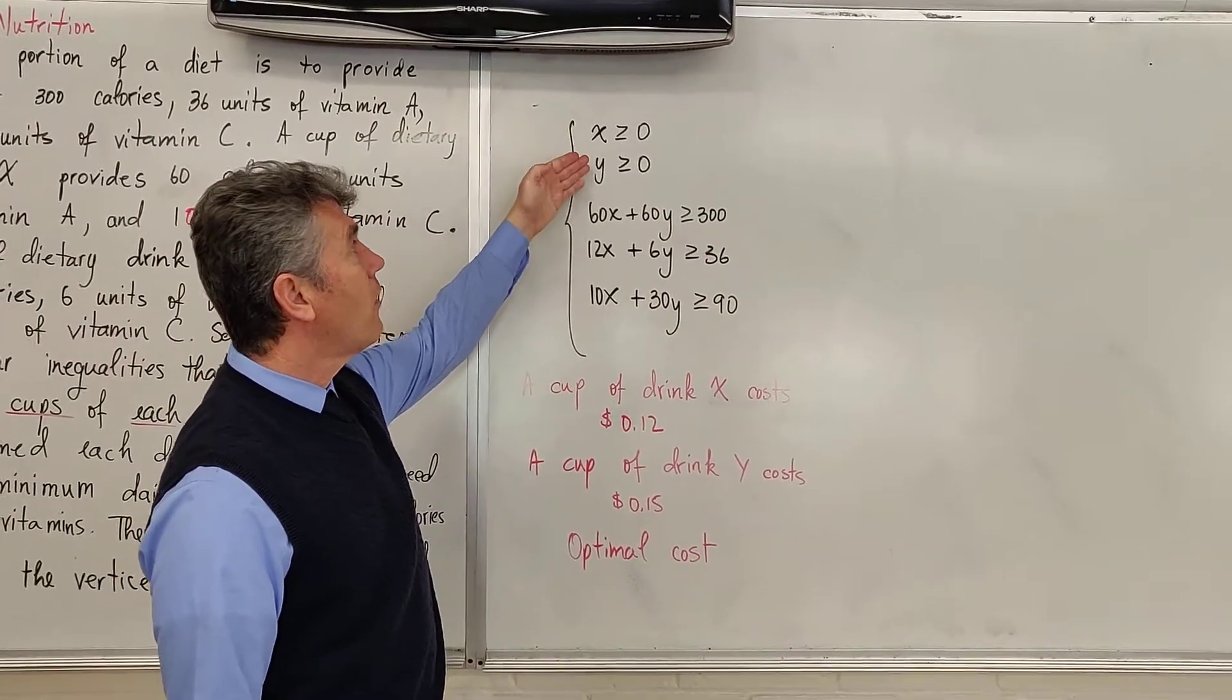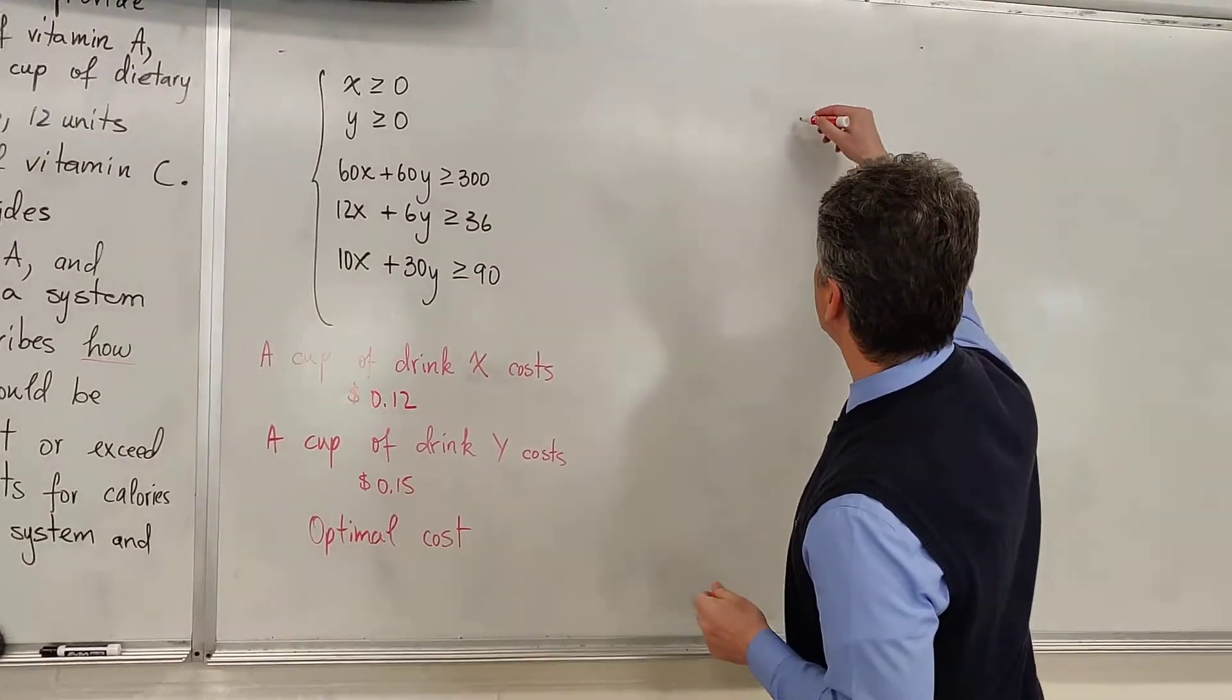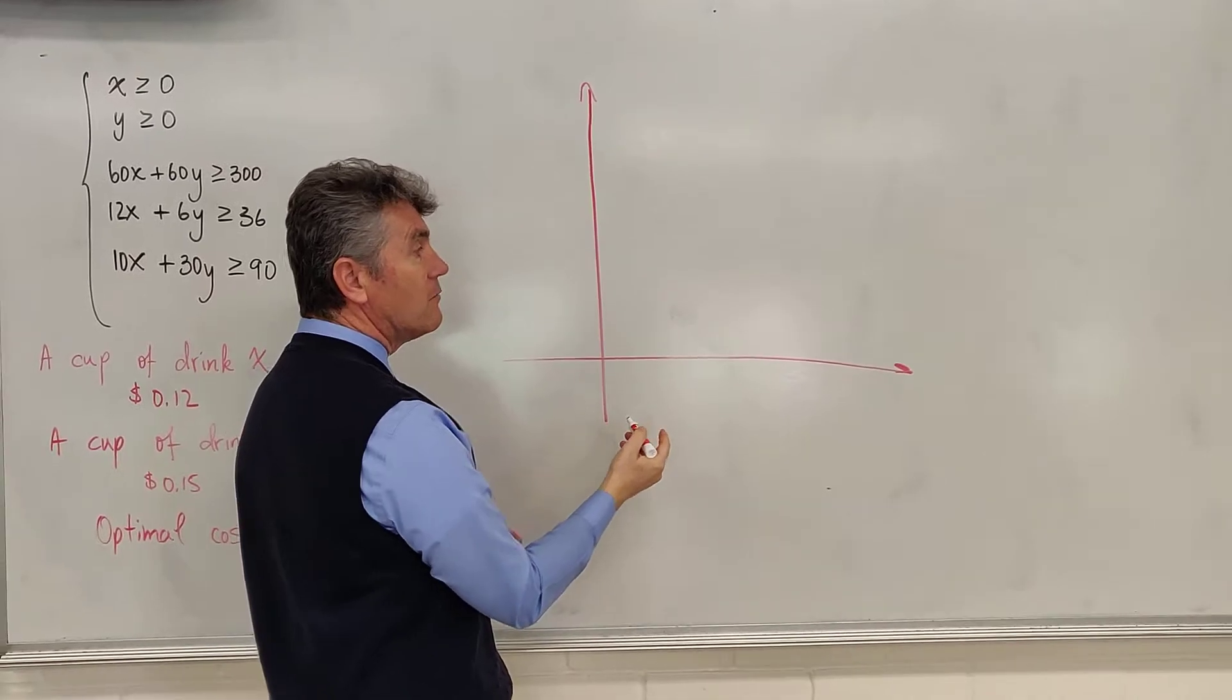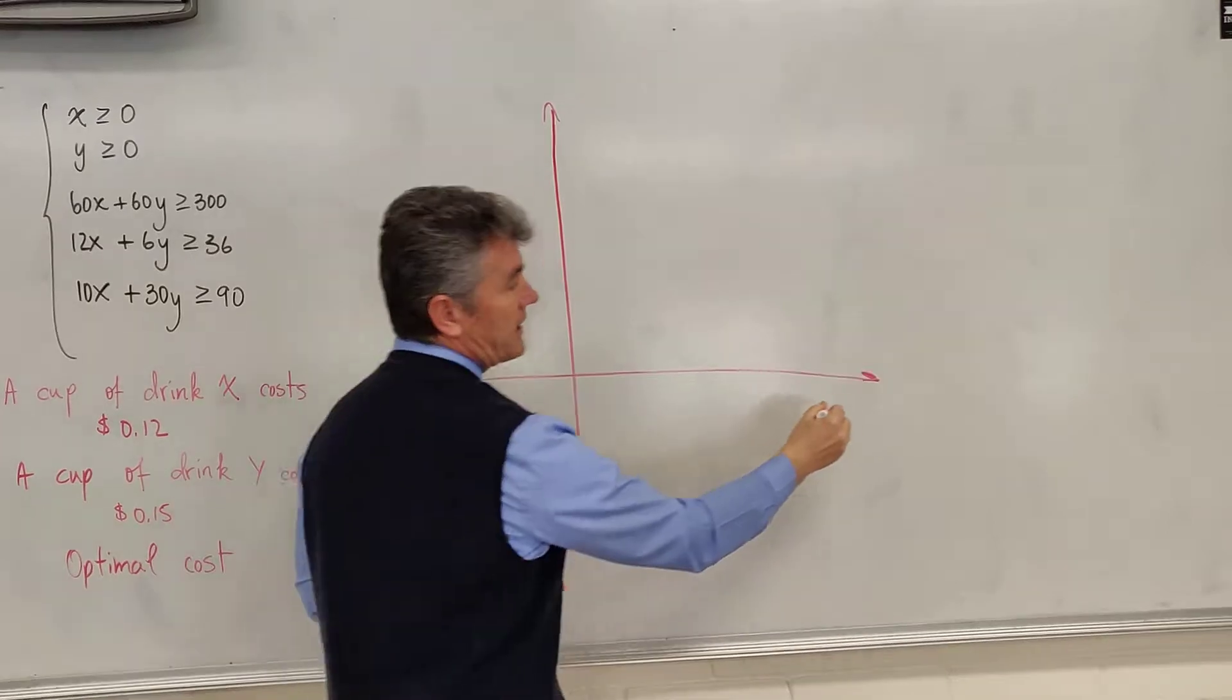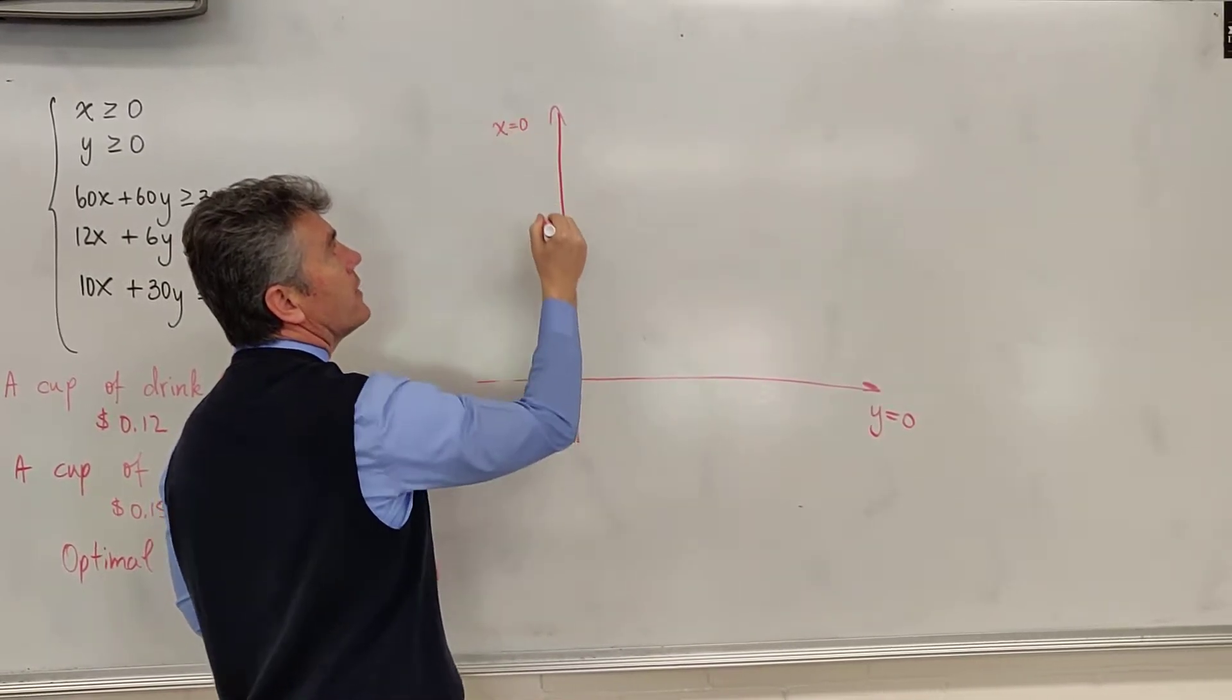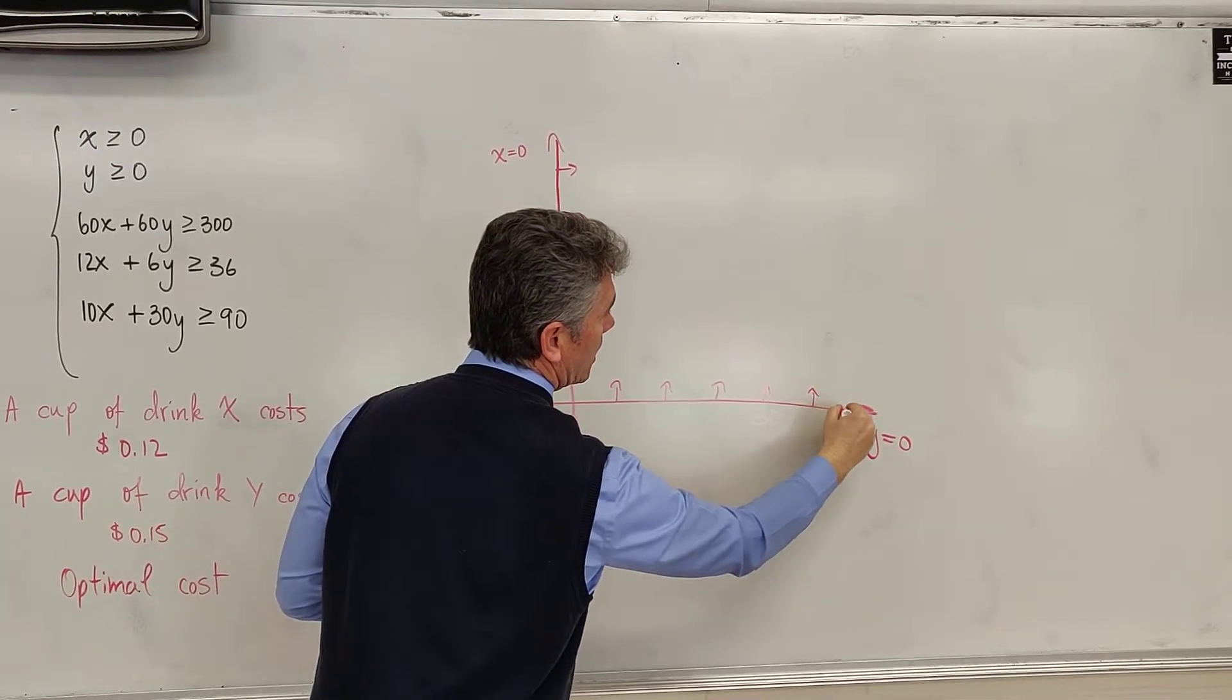x is greater than or equal to 0, y is greater than or equal to 0. That means that our solution point will lie in the first quadrant. You can graph the y-axis and the x-axis. Solid graphs, because the solution point could be on the x-axis or the y-axis. Let me remind you, this x-axis has equation y equals 0. The y-axis has equation x equals 0.